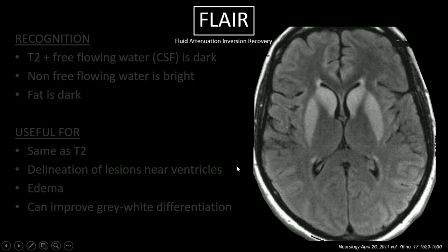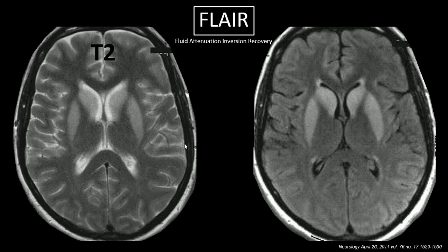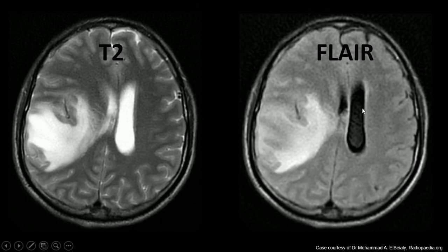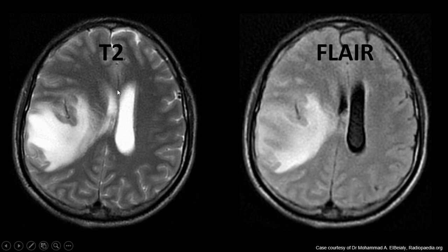Let's compare FLAIR to a T2 image. It looks just like the T2 image, except the ventricles or CSF spaces are inverted. Here's an example of where FLAIR does a better job of delineating lesions near the ventricle. On T2, we've got something causing edema that comes right up against the ventricle, and it's really tough to tell whether the ventricle is completely obliterated by edema. But comparing to FLAIR, we can see nice delineation between the area of edema and the actual ventricle.